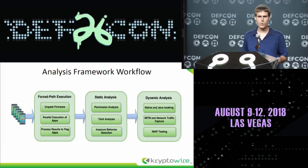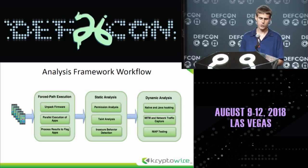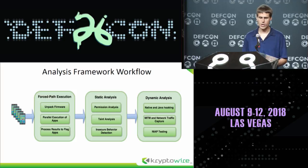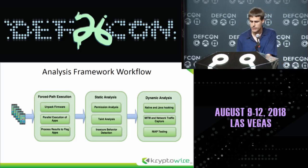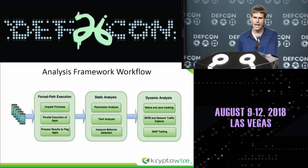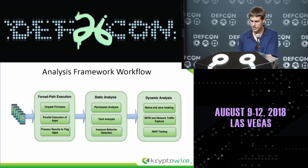We have an analysis framework. We have something called force-path execution which will take a firmware, unpack it, and process all of the apps in parallel. The force-path execution can actually force into certain branch constraints in case there's any triggered functionality, to try and make the application show all of its behavior under any circumstances. We also do some static analysis, some taint analysis to see if there are vulnerable flows — for example, to see if obtaining the user's text messages flows to a network socket. We also use a custom Android build where we control the framework key to perform hooking at the framework level and hook some library calls, to see how the application is interacting with the system, and man-in-the-middle the traffic.